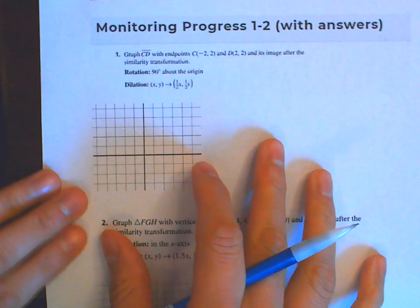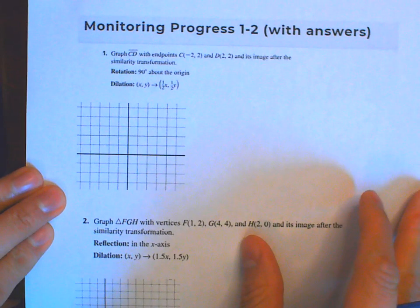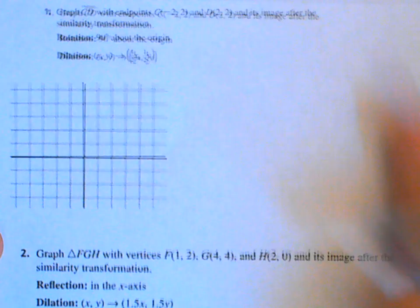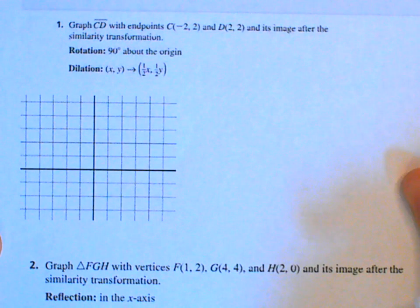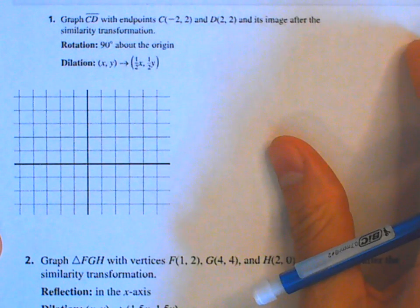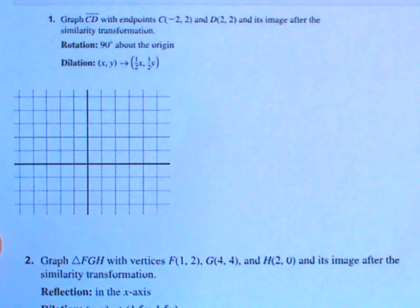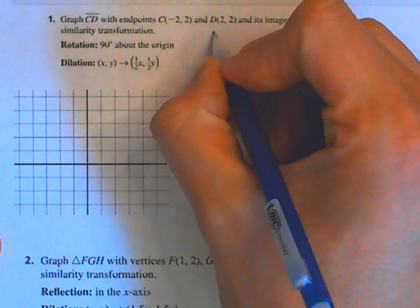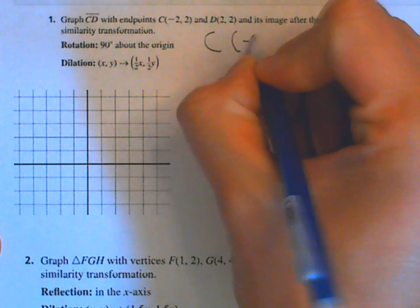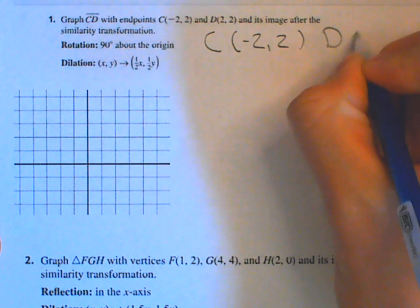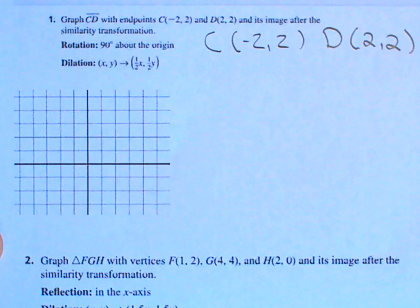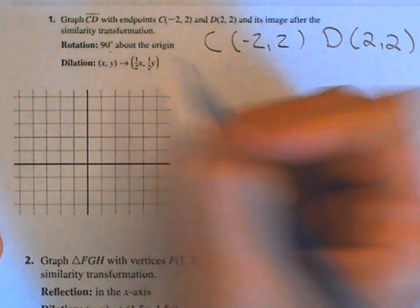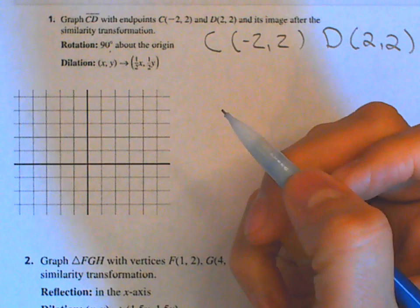Now we're going to do monitoring progress question number one. The coordinates given are: for C, negative 2 comma 2, and for D, 2 comma 2. The first transformation is a 90-degree rotation about the origin — all rotations here are counterclockwise.